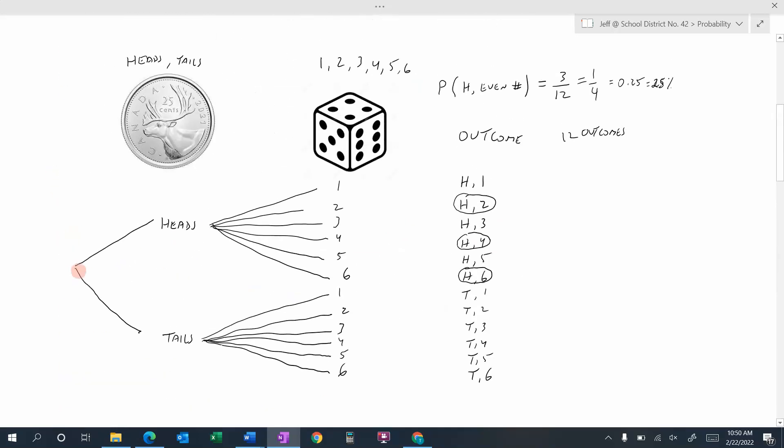And if we go back and look at this one, how many outcomes did we have here? Well, there was two, either heads or tails. How many outcomes did we have here? There was six. And when we multiply two times six, we get 12 outcomes.